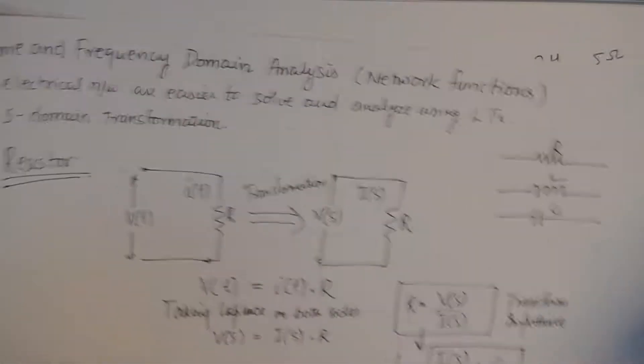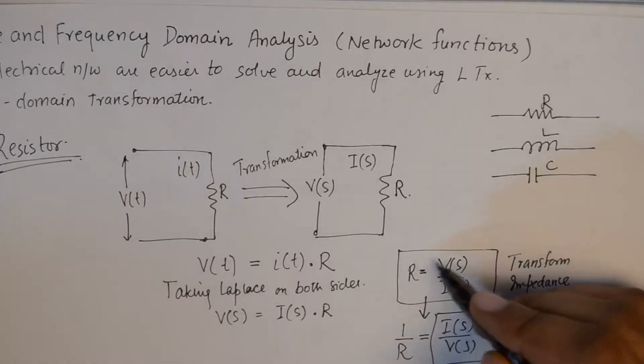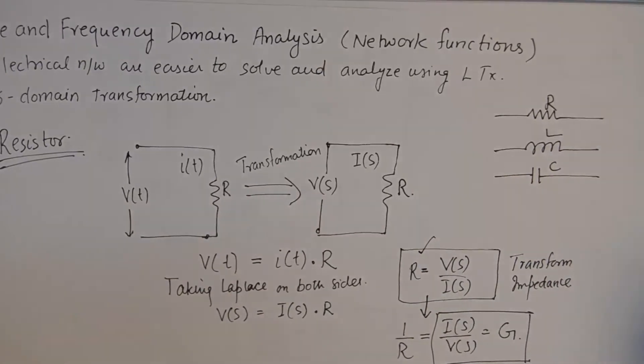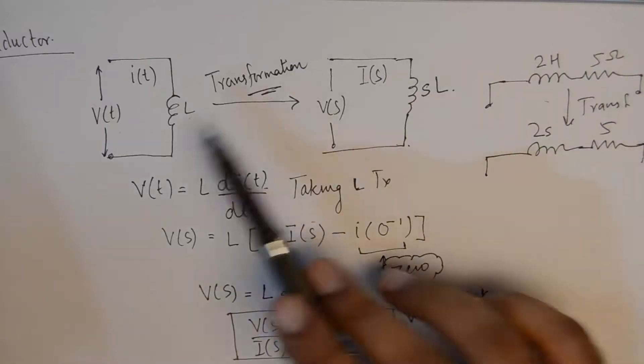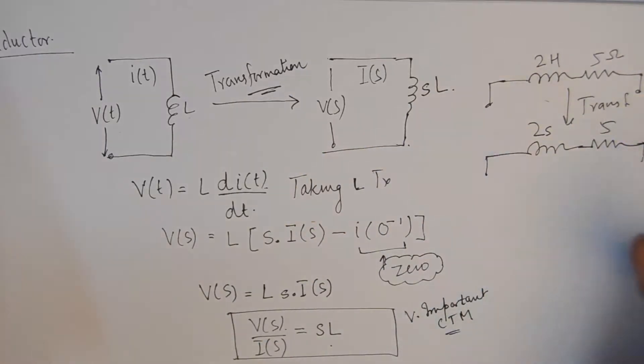We now have two results in hand. The first result is the value of R remains as it is after transformation. The second result is the value of L changes to s·L after transformation. Now we go on to find the value of capacitance in a branch.